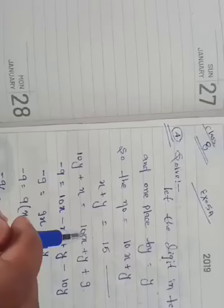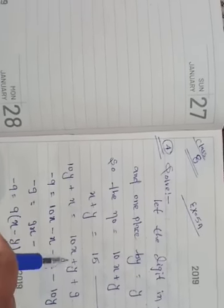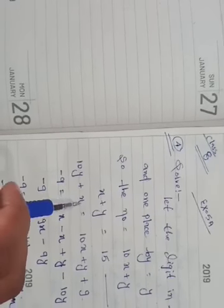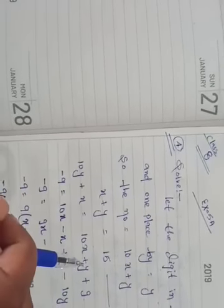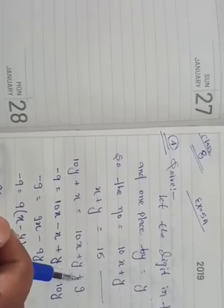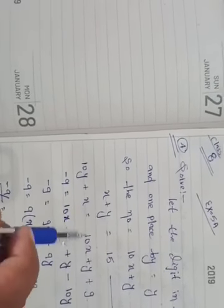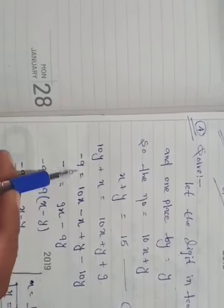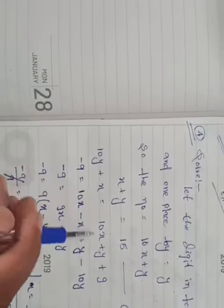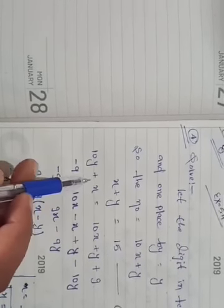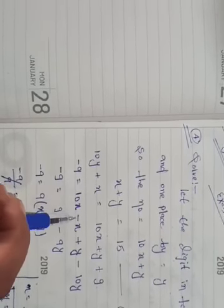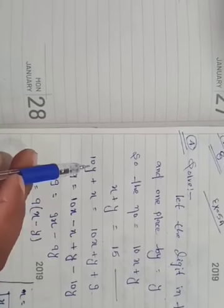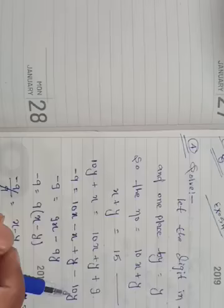For the second equation: 10x plus y plus 9 equals 10y plus x. This is the interchanged number. Now we will rearrange this equation. So 9 equals 10x minus x plus 10y minus y.